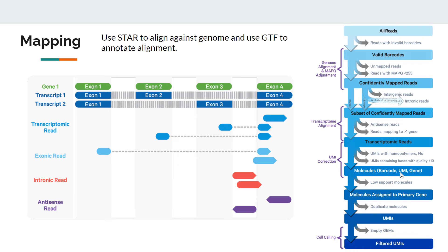After filtering, we have a good UMI that maps to a unique gene with a correct barcode. In the next step, Cell Ranger removes duplicate molecules through UMI deduplication, and then finally counts the UMIs. We now have count data — for every droplet, how many UMIs are detected. This produces a gene-by-droplet matrix. Note it's 'droplet' not 'cell' yet, because the next step is the cell calling algorithm.